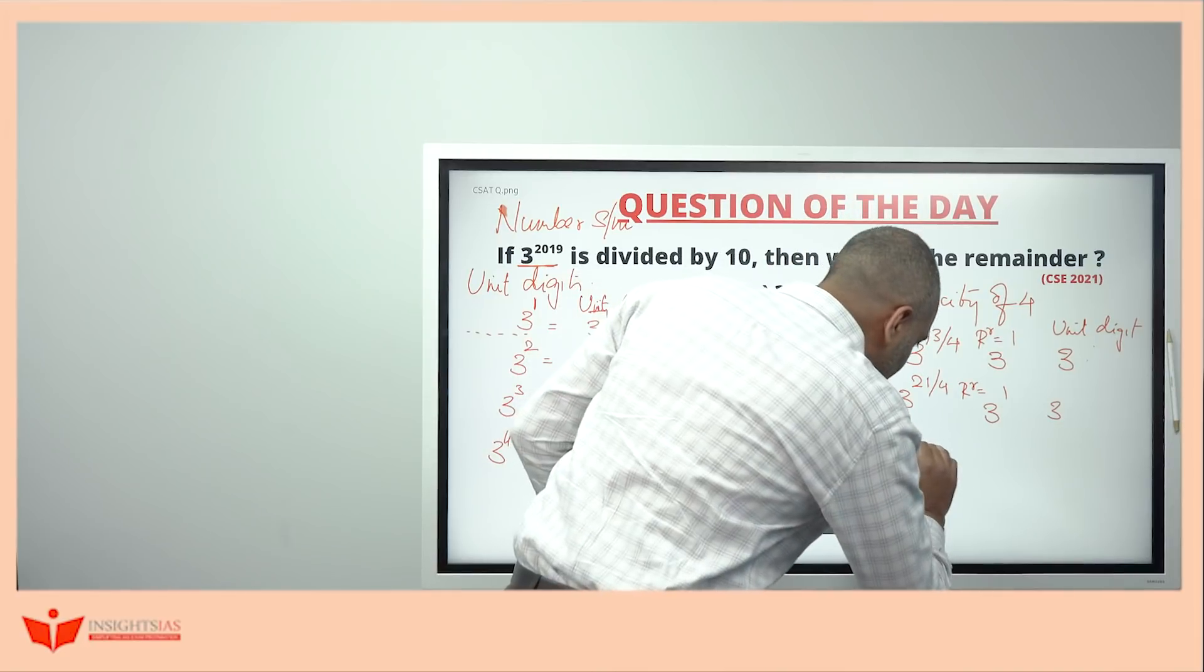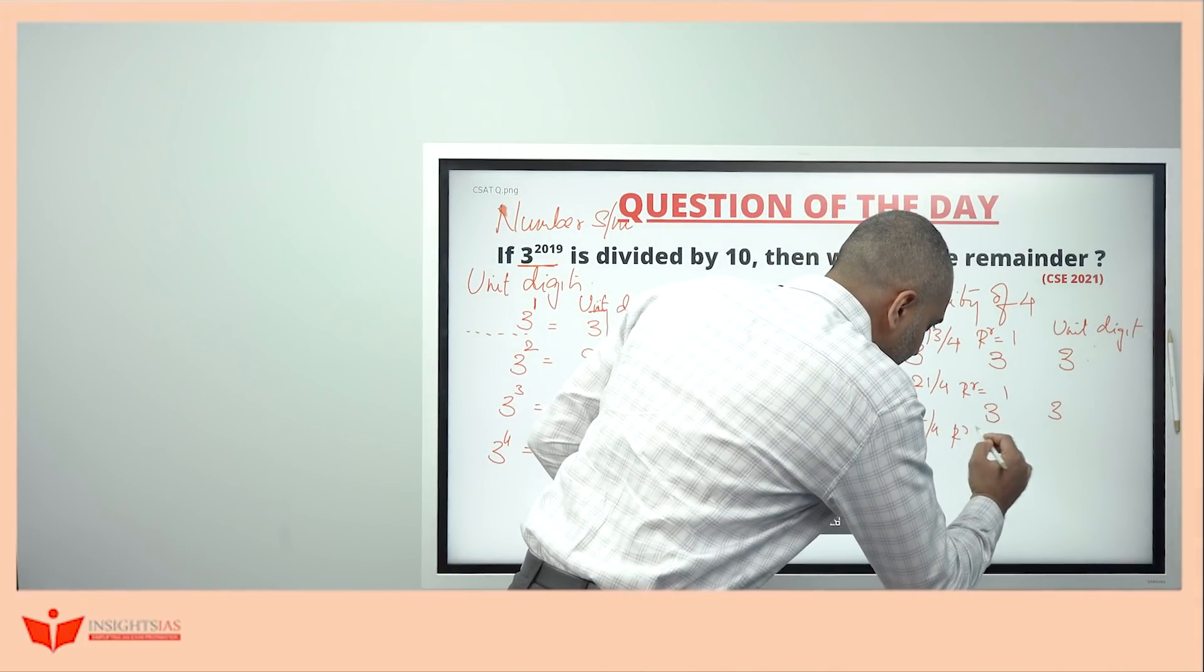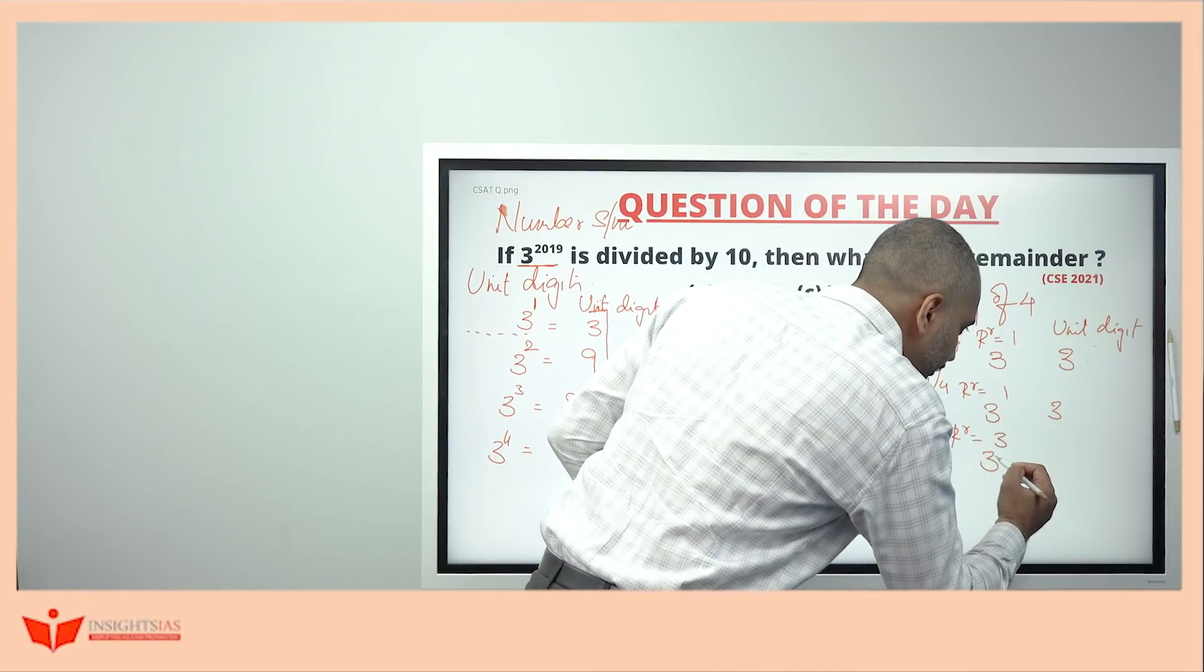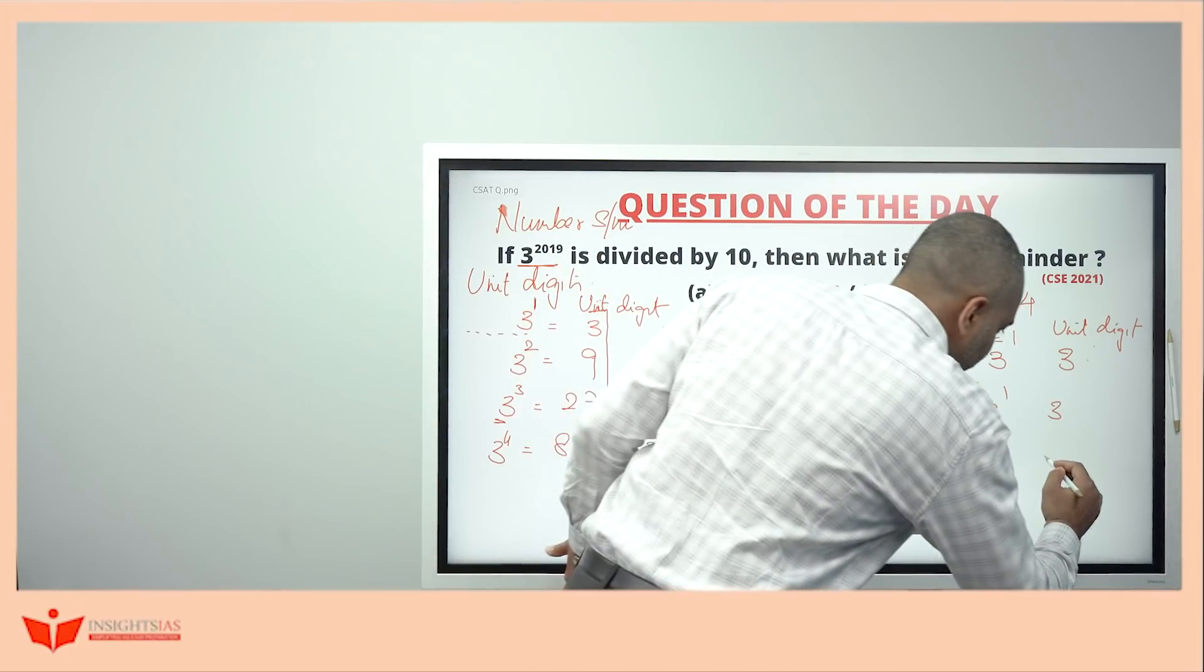Similarly, let us take 3 power 55. When you divide this by 4, the remainder here is 3. That is 3 cube. See, whenever 3 cube is there, unit digit is 7.